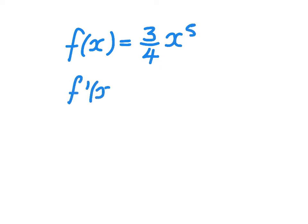We can also have fractions in our function. So if f of x was equal to 3 quarters of x to the power of 5, our derivative would be, we'll multiply by 5, well 5 times 3 quarters is 15 quarters.